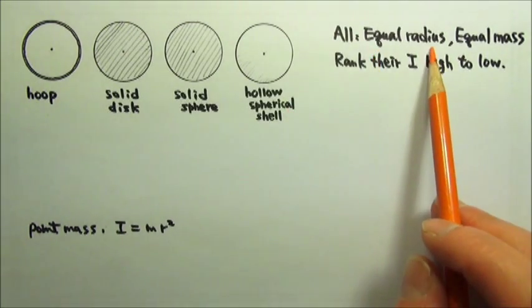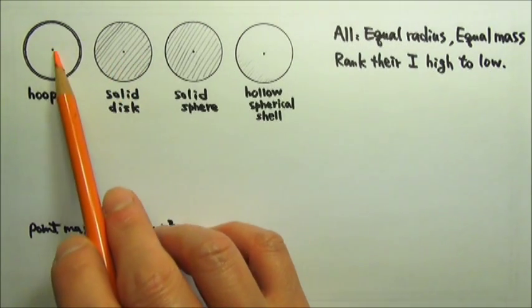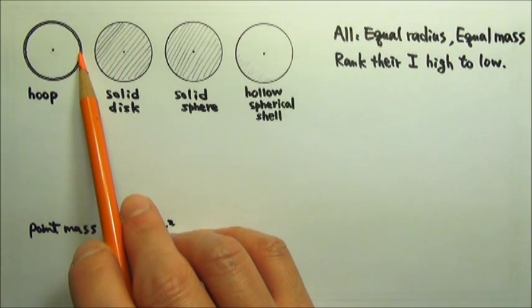For the same outer radius and the same total mass, the farther away from the axis the mass distribution, the larger the rotational inertia.